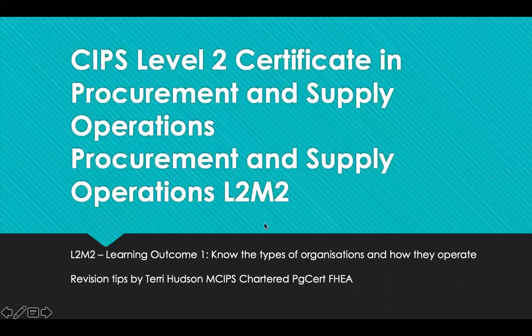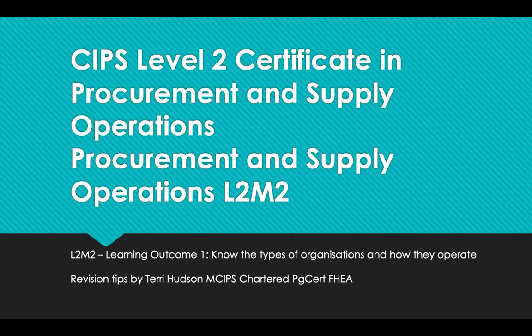Hello and welcome to Revision Tips for CIPS Level 2 Certificate in Procurement and Supply Operations. This is Module 2, Procurement and Supply Operations, Learning Outcome 1. This will help you know the different types of organisations and how they operate.